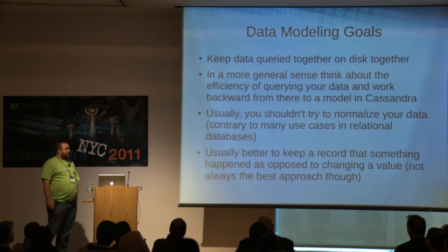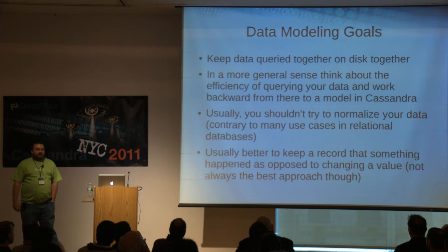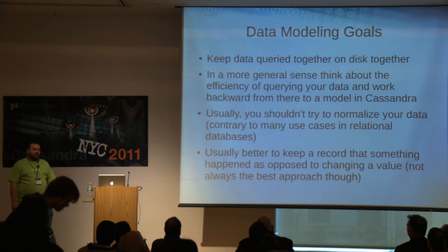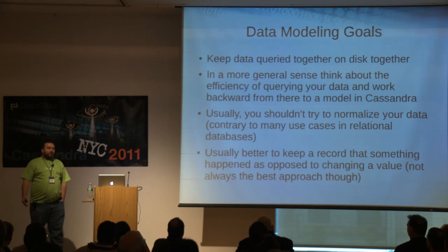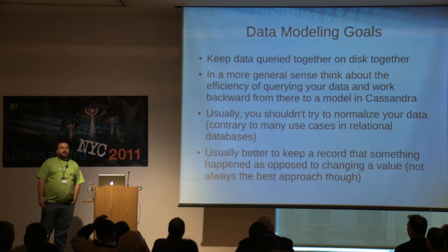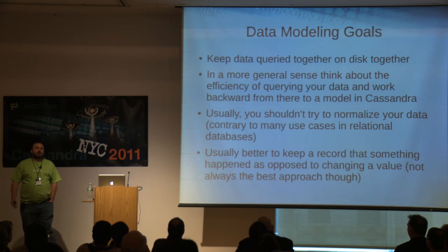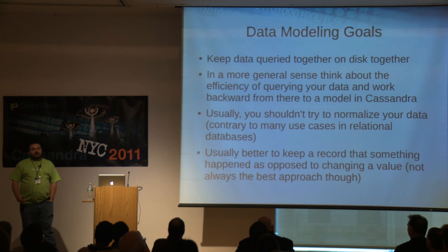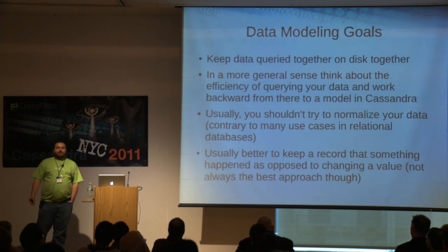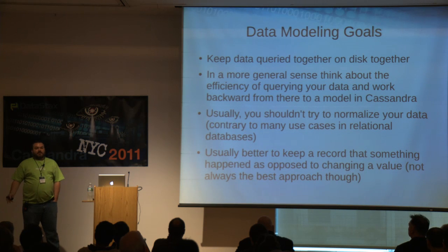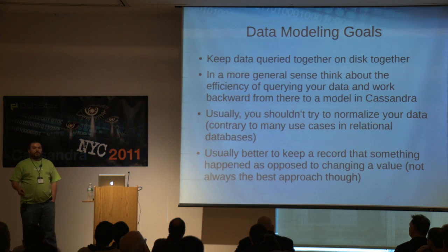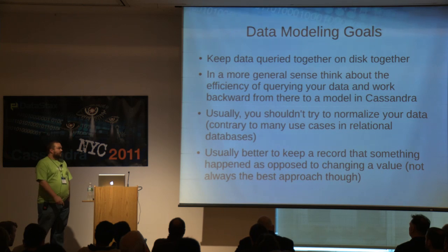You shouldn't try too hard to normalize your data — it's quite a bit different from a relational system. You actually want to denormalize it. It's very common in Cassandra to write data multiple times. Write speeds are extremely fast and it won't impact your IO much, so it's actually very cheap. When it comes time to read the data, all the data you actually care about is there. You have different views of the data; you just denormalize it multiple times.